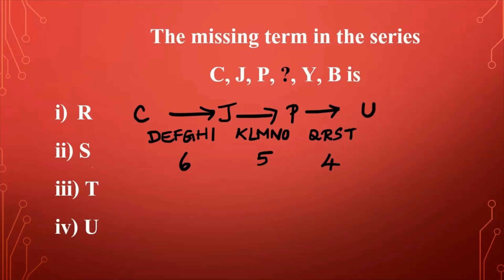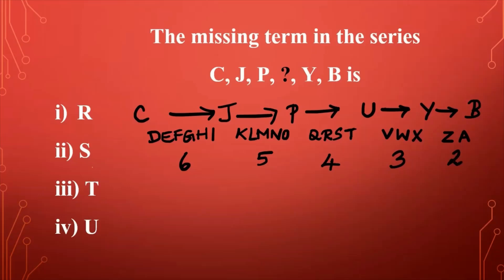We can confirm it by finding the distance between U and the next letter Y. After U comes V, W, X — three letters between U and Y. And between Y and B, there's Z and A — two letters, going in a loop. So the pattern is six, five, four, three, two — and our answer is U, the missing term in the series.